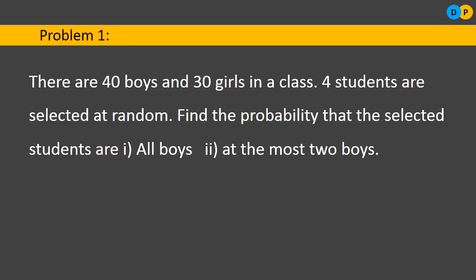The first problem: there are 40 boys and 30 girls in a class, so altogether there are 70 students. 4 students are selected at random out of these 70. We need to find the probability that the selected students are: first, all boys; second, at the most 2 boys. Out of 70 students, 40 are boys and 30 are girls, and we draw a sample of size 4.